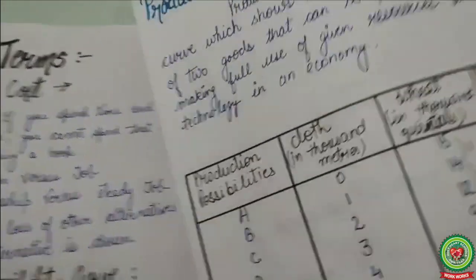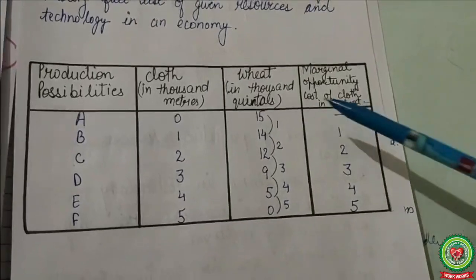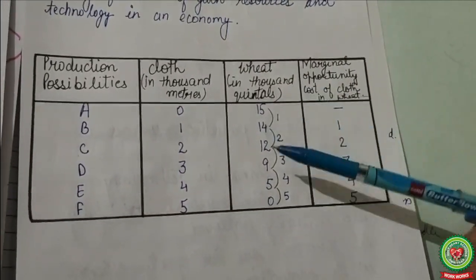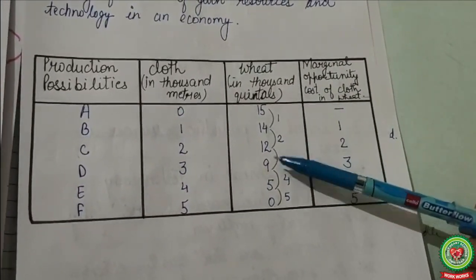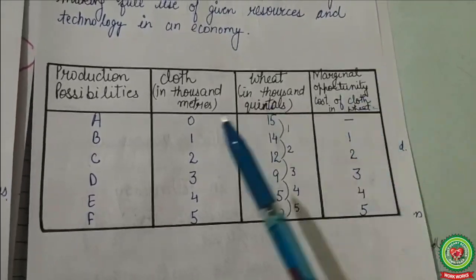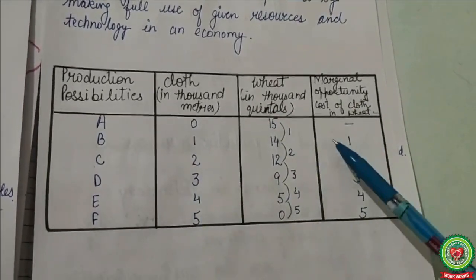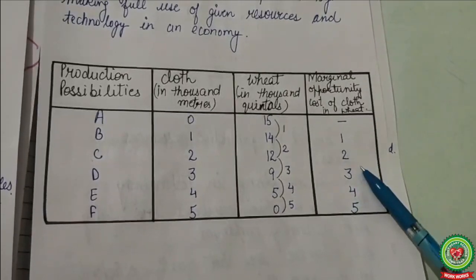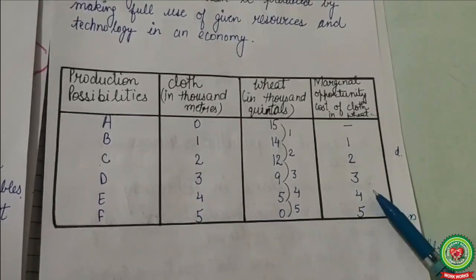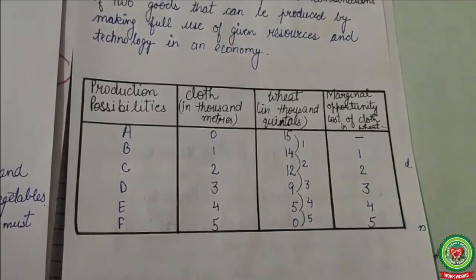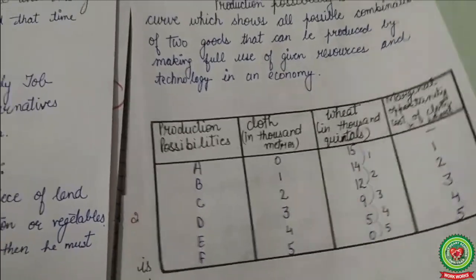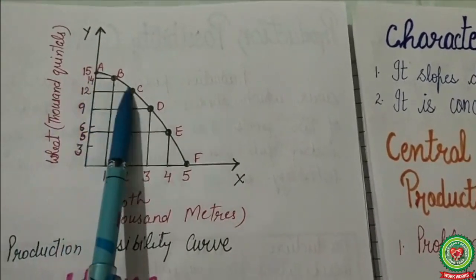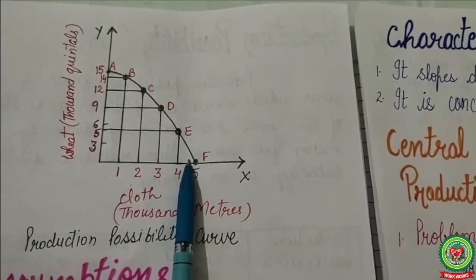The marginal opportunity cost — for example, 15 minus 14 equals 1 — represents the additional unit sacrificed to produce one more unit of another commodity. This marginal opportunity cost is always increasing, which is why the Production Possibility Curve is concave to its origin.